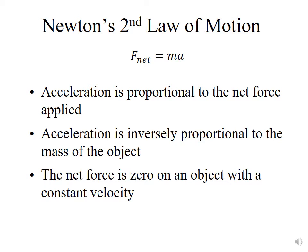Newton's second law of motion states that net force equals mass times acceleration. The acceleration is proportional to the net force and inversely proportional to the mass of the object. If the net force is zero, the object is either stationary or moving at constant velocity. In the atmosphere, an air parcel is subjected to multiple forces, and we must add up the net force from all horizontal forces to determine where that air parcel will move.